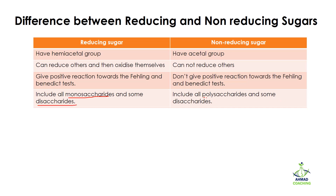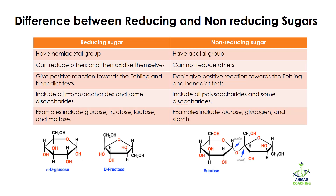Examples of reducing sugars include glucose, fructose, lactose, and maltose. Non-reducing sugars include sucrose and starch. These are all polysaccharides or complex sugars of glucose, and because of their complex bonding, they have no free hydrogen available — which is why they are non-reducing sugars.